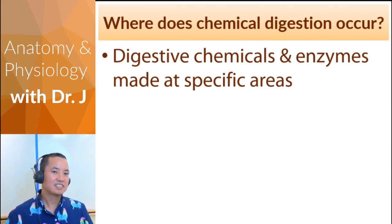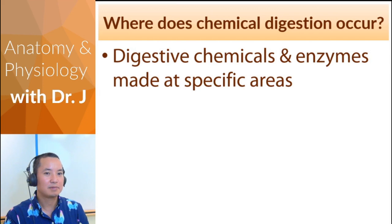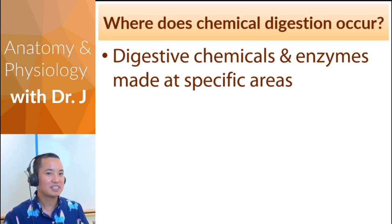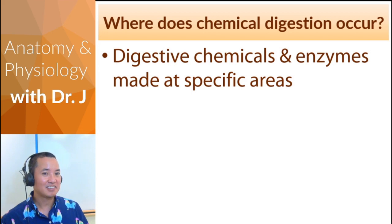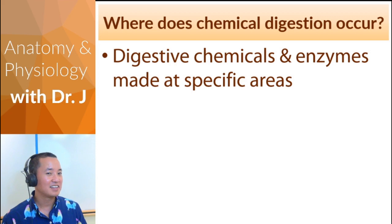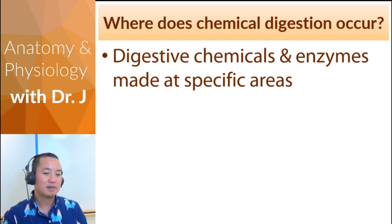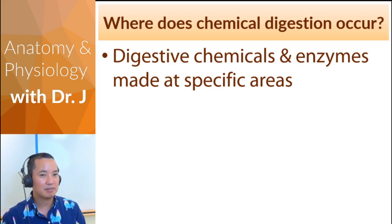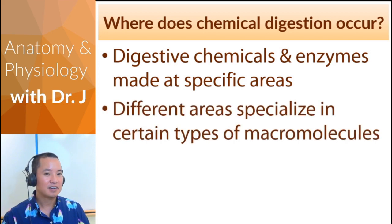In chemical digestion, not every part of your body uses the same chemicals and macromolecules. Sometimes you get certain digestive chemicals and enzymes that appear only in certain places — like stomach acid, gastric acid, hydrochloric acid. You don't have hydrochloric acid in your mouth or in your large intestine. Some chemicals are kept in very specific areas, so different parts of the digestive system specialize in which macromolecules they break down.